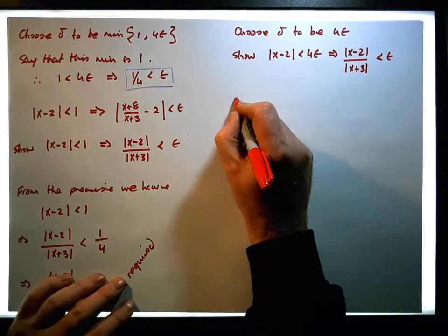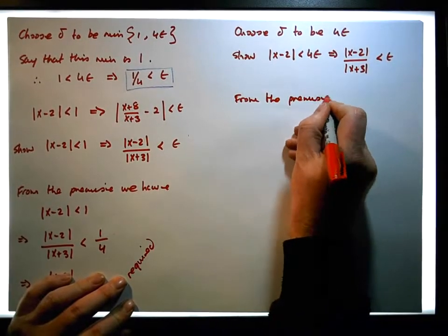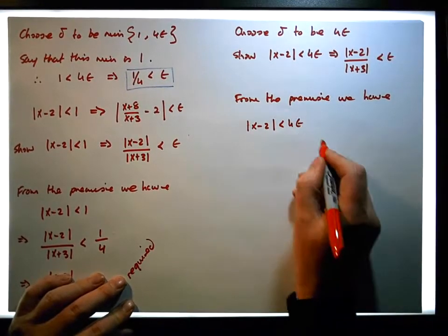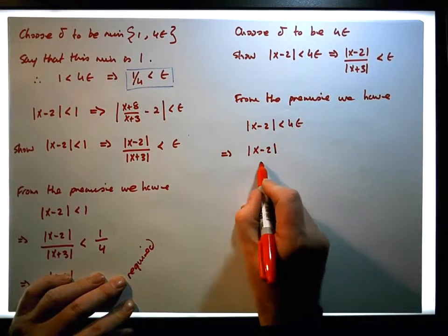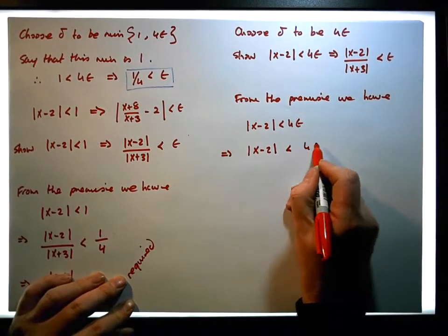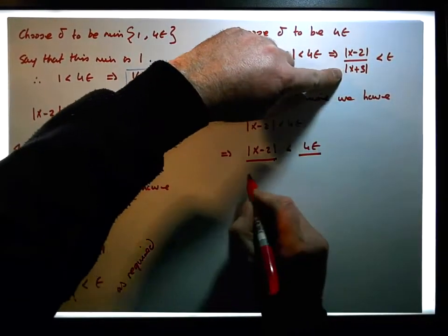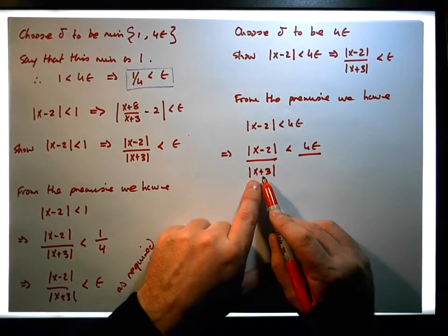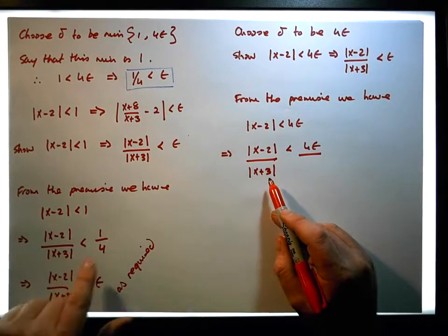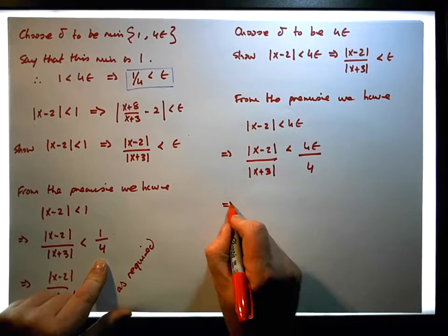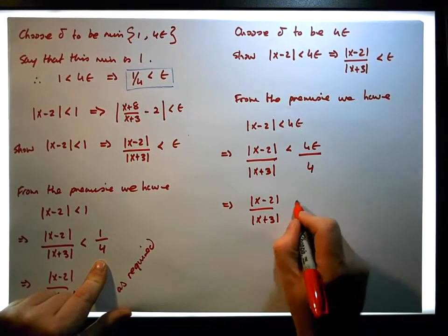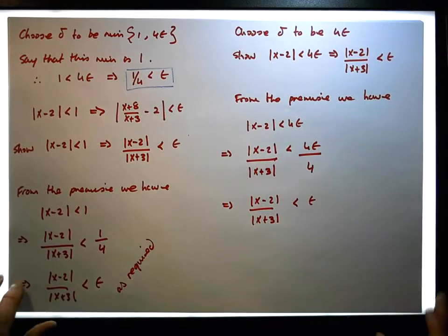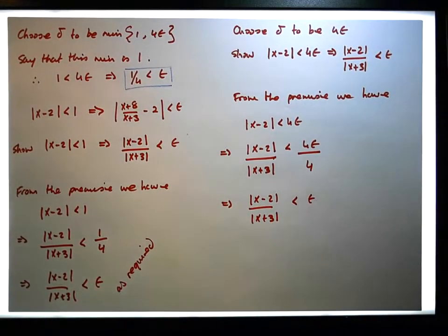From the premise, we have that the absolute value of x minus two is less than four times epsilon. This implies that the absolute value of x minus two being less than four times epsilon, if I divide here by x plus three — to keep this inequality true I need to divide by a number smaller than x plus three, and that number is four — implies that x minus two all over x plus three is in fact less than epsilon. So when we choose delta to be four times epsilon, this proof was a little bit more straightforward.